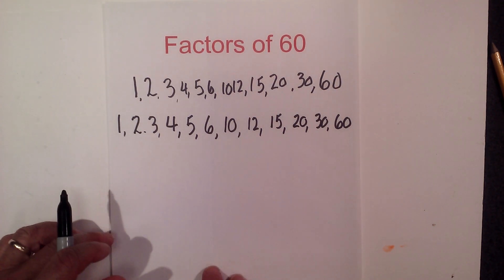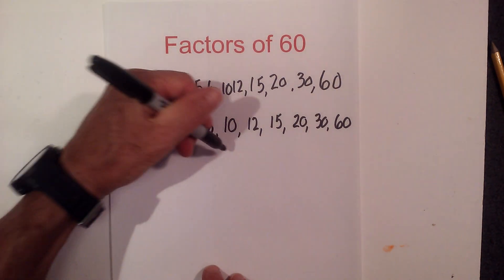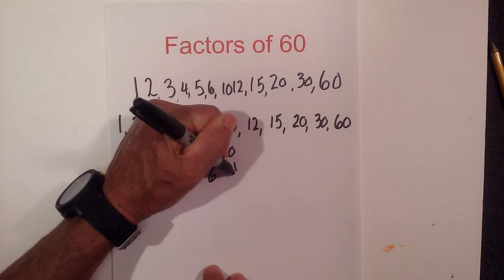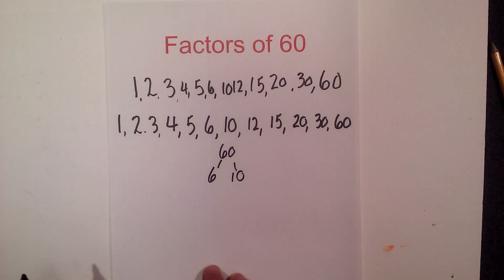Okay, now let's complete a factor tree so we can find the prime numbers. I'm going to start with 6 times 10. I usually start with 2, but this one's pretty obvious.